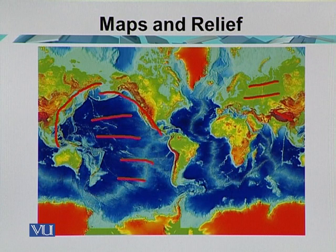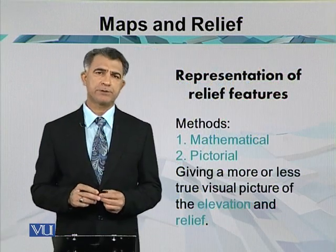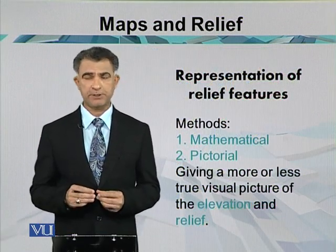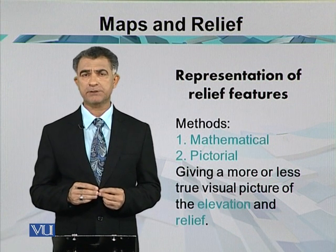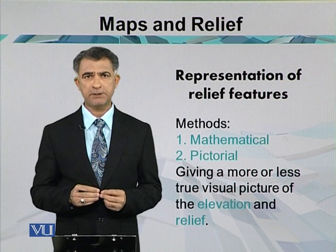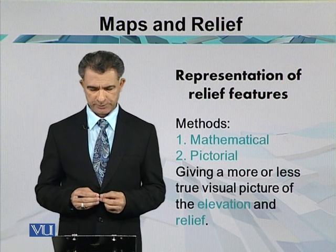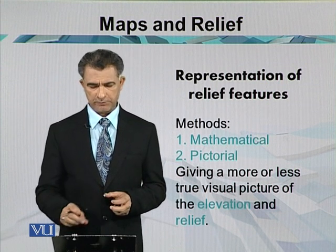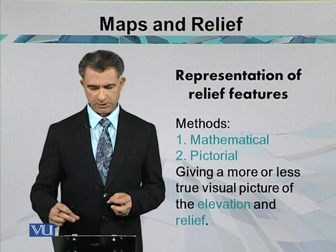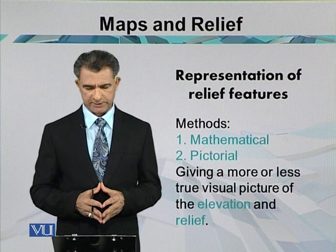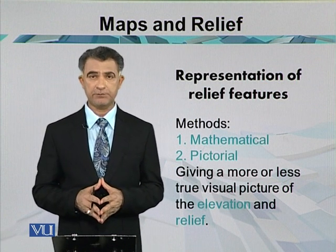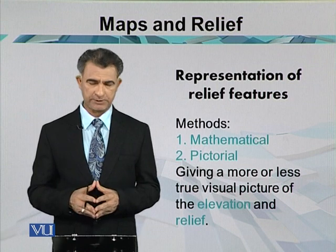When representing relief features on a map, there are two methods. The first method is called the mathematical method, and the second is called the pictorial method. When we want to give a more or less true visual picture of elevation and relief, we use these two methods.